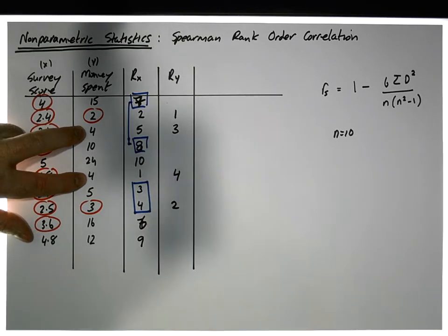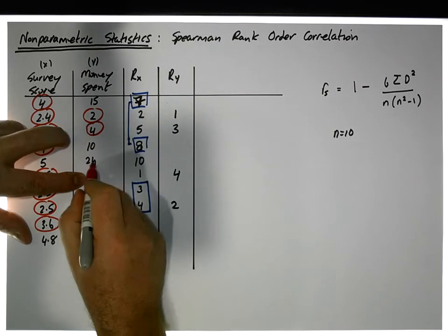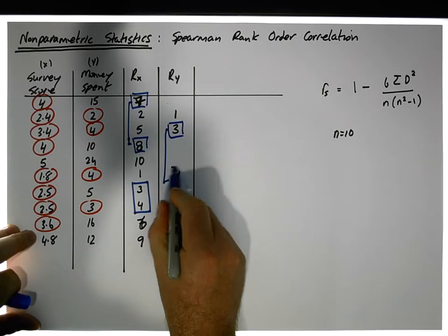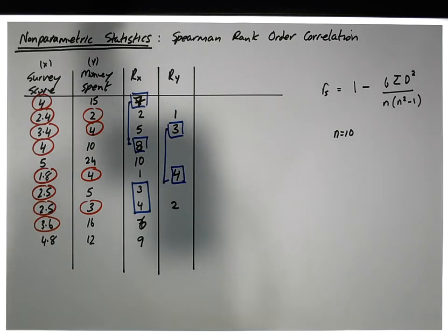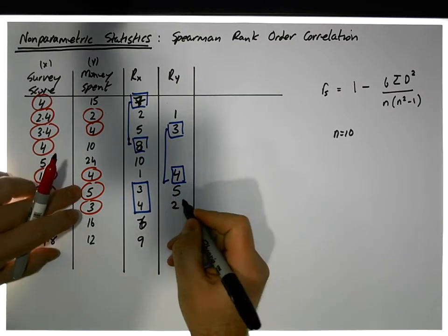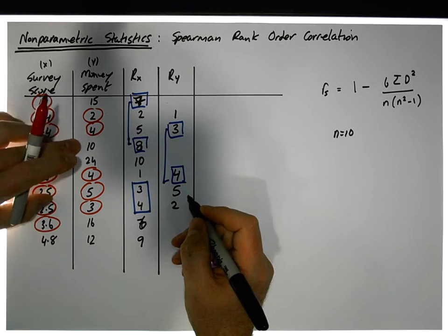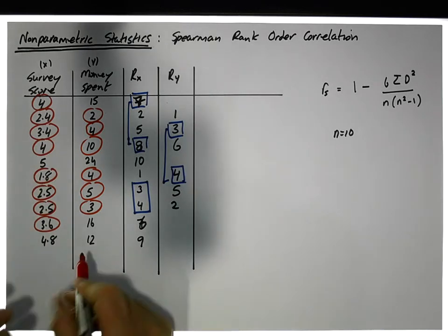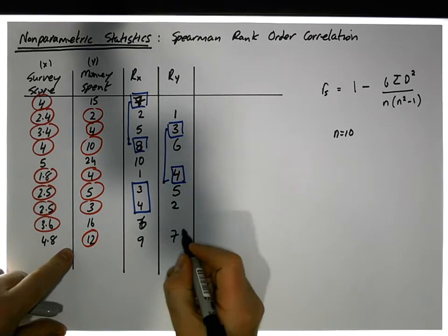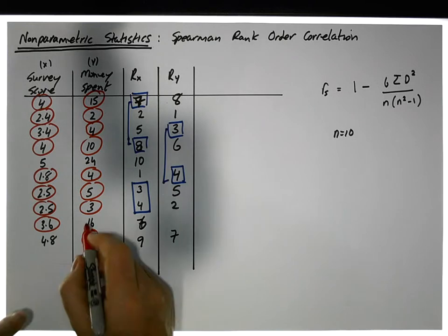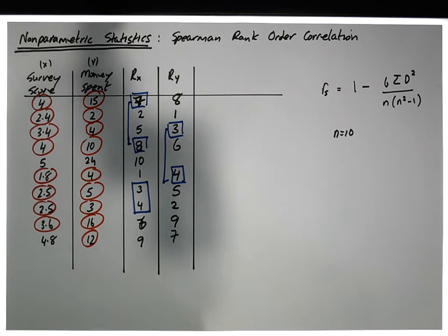This four here gets ranked at position four, so we have two values that are the same. The next value is a five, which gets ranked at position five. The next largest value is ten — that's the sixth value. The next largest is twelve, which is the seventh value. Then fifteen is the eighth value, sixteen is the ninth value, and twenty-four is the tenth value.